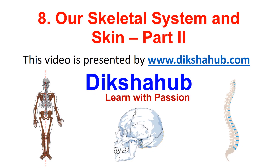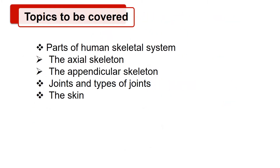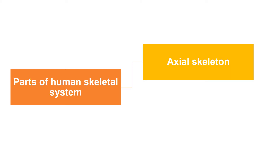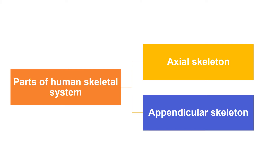Hello friends. This video on our skeletal system and skin part 2 is presented by Deekshahub.com — learn with passion. Topics to be covered in this video are parts of the human skeletal system. The human skeletal system can be divided into two parts: the axial skeleton and the appendicular skeleton system. Let's discuss these skeleton systems in detail.